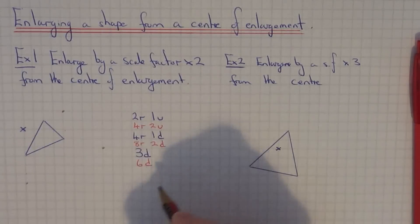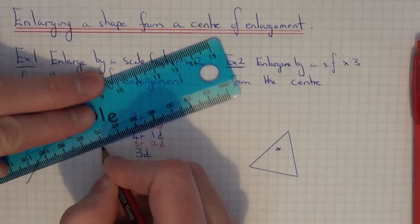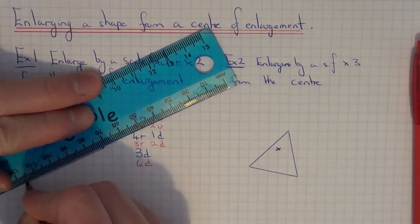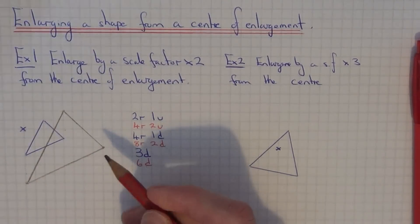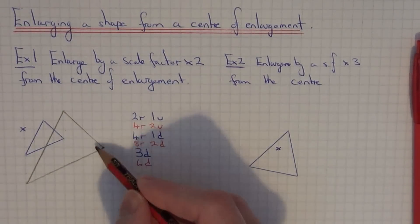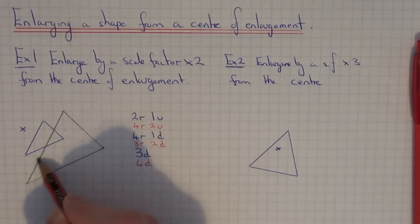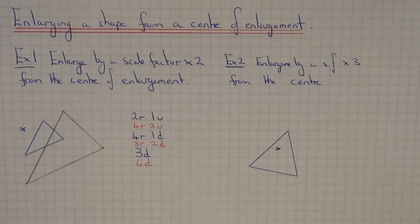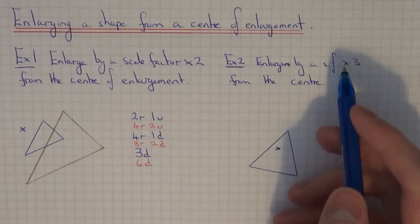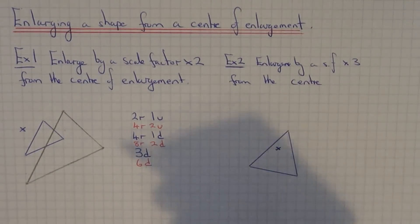Once you've plotted your points, just join those points up neatly with your ruler. As you can see, all the side lengths of this new shape are twice as big as the side lengths in the first shape. So let me do another example. In example two, we've got to enlarge a shape by a scale factor times three.